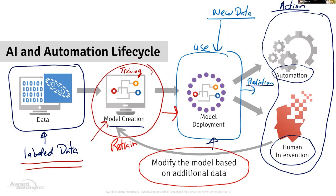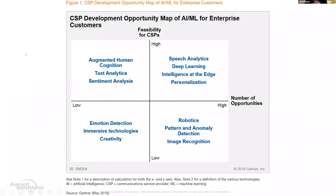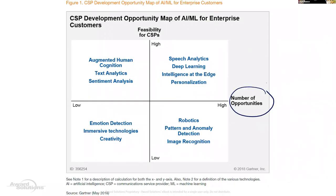With that as a backdrop, I'd like to look at a number of use cases — in all of them we're trying to solve one of these narrow AI problems. As we think about this from a communication service provider's perspective, this chart from a Gartner report shows on the x-axis the number of opportunities in the CSP space, and on the y-axis how feasible it is within the telecom industry.